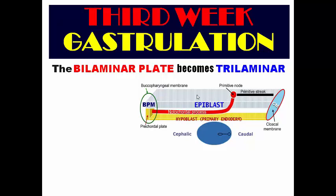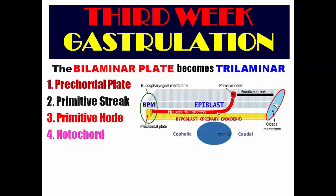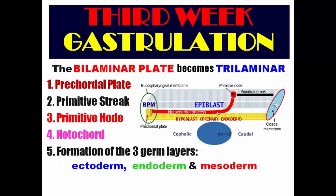There are several changes in the bilaminar plate. Number one: formation of the pre-chordal plate. Number two: formation of the primitive streak. Number three: formation of the primitive node. Number four: formation of the three germ layers — ectoderm, endoderm, and mesoderm — and the formation of the allantois.